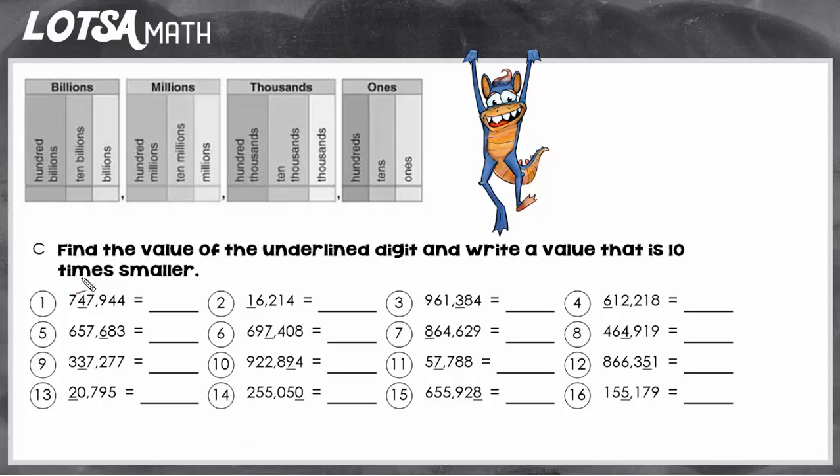So first off, the value of this underlined digit is going to be forty thousand. Well, to make it ten times smaller means divide by ten. So forty thousand divided by ten would be your answer. However, we can do it without having to know how to divide.